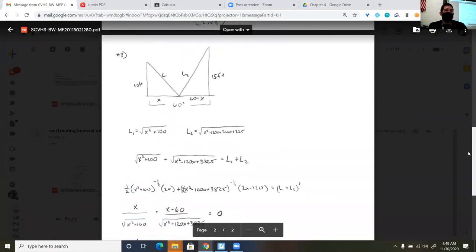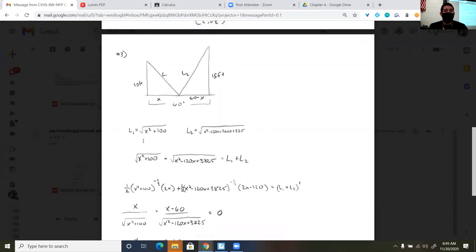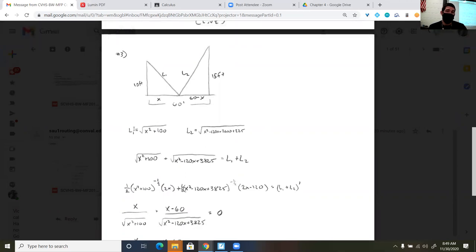And the last one, we had done one of these in class. I drew my picture. I used the Pythagorean theorem to find what l sub 1 and l sub 2 would equal. So it was x squared plus 100 squared equaled l sub 1 squared and then square root of both sides.